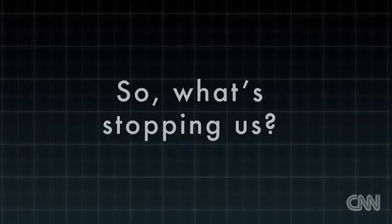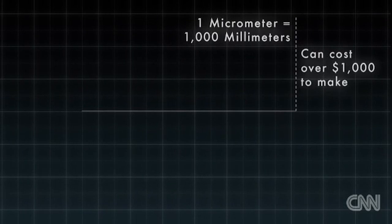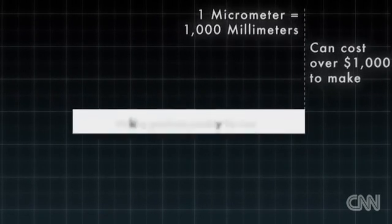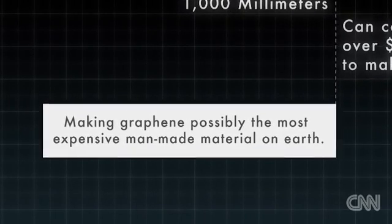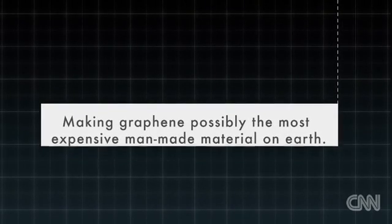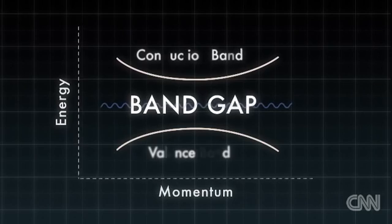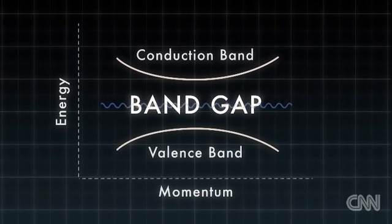So, what's stopping us? A flake of graphene just a micrometer thick can cost over a thousand dollars to make using the scotch tape method, making it possibly the most expensive man-made material on earth. Another problem? Regular graphene lacks what's called a band gap, the property that allows it to function as a switch.